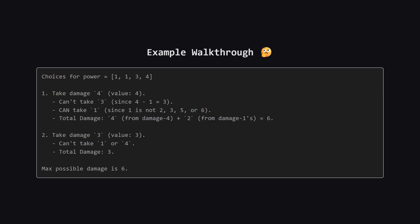What if we started by picking the damage 3 spell instead? Its value is 3. The rules say we can't use spells with damage 1, 2, 4, or 5. That knocks out both our other groups. So if we pick 3, we can only get a total of 3. Comparing our options, 6 is clearly better than 3. So the maximum damage we can get is 6.